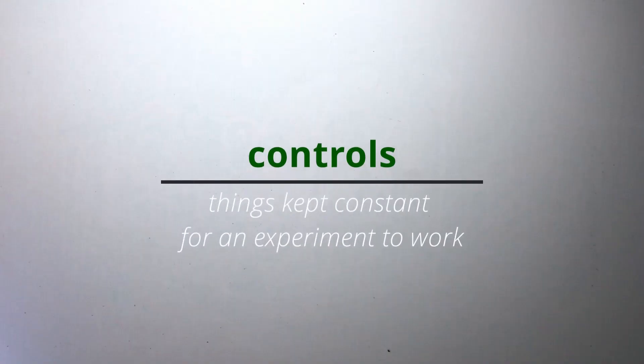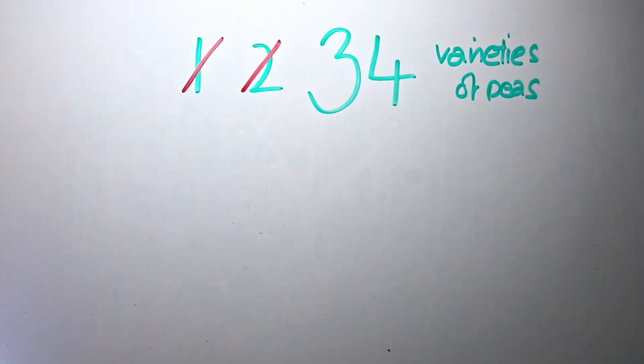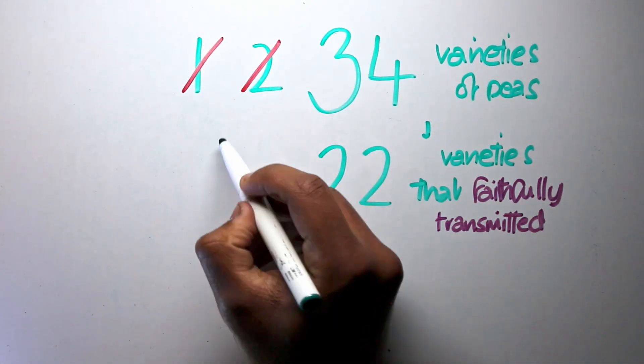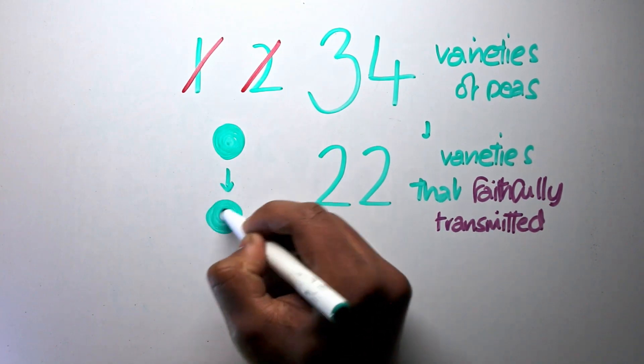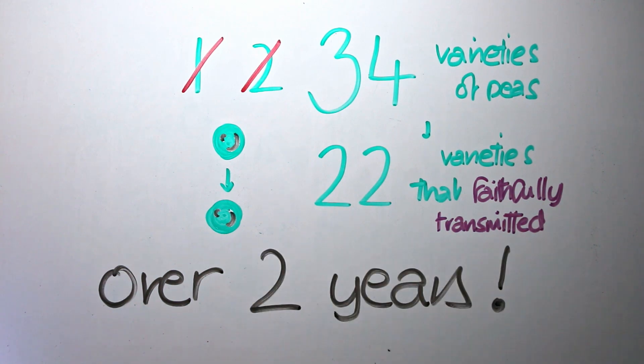To set up the controls for his experiment, he bought not one, not two, but thirty-four different varieties of peas. Of these, he picked twenty-two varieties that faithfully transmitted, that is, ones whose traits were inherited across generations nearly perfectly. Over two years, he made a batch of pure-breeding pea plants.